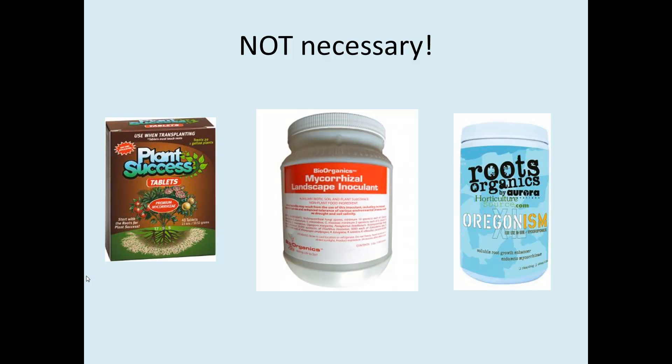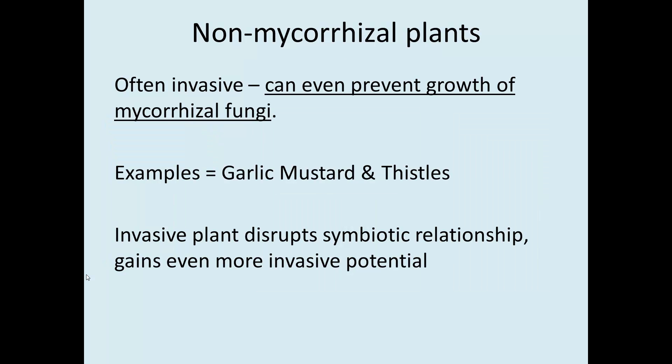Admittedly, if you had an area where the soil had been so disturbed that no normal soil material remained, you might need to add something like this — but not in any normal landscaping situation. Interestingly, some plants are non-mycorrhizal and actually use that as part of an invasive behavior. Garlic mustard and thistles are famous for this: garlic mustard can move into a healthy ecosystem and actually exudes things from its roots that damage soil mycorrhizal fungi, disrupting the mycorrhizal relationship with other plants and thereby exposing more area for it to take over.